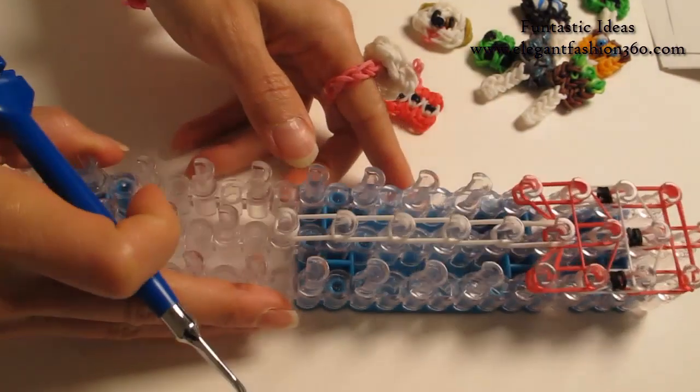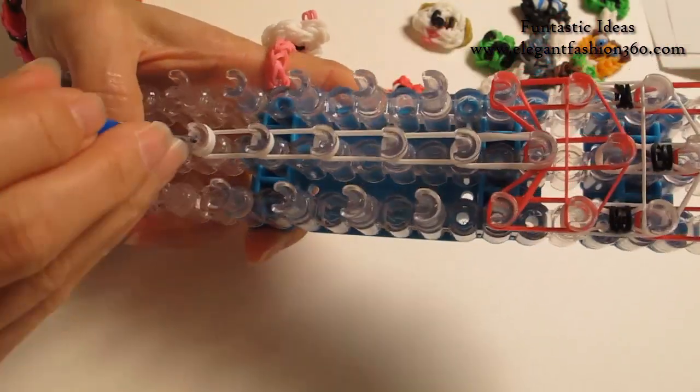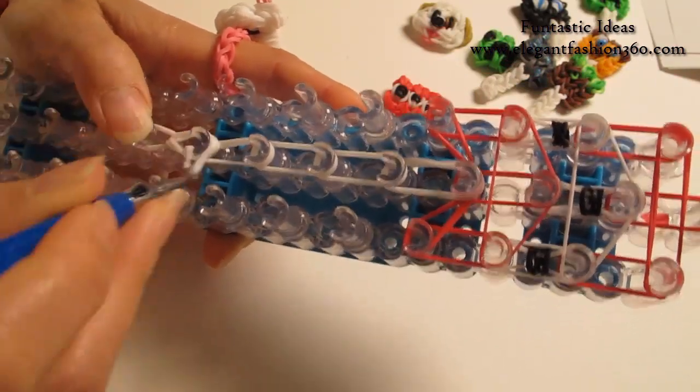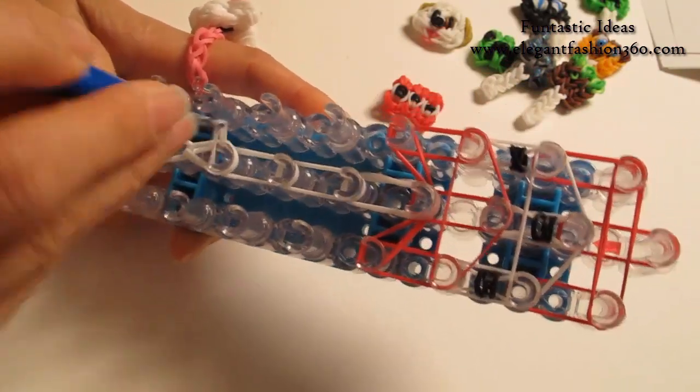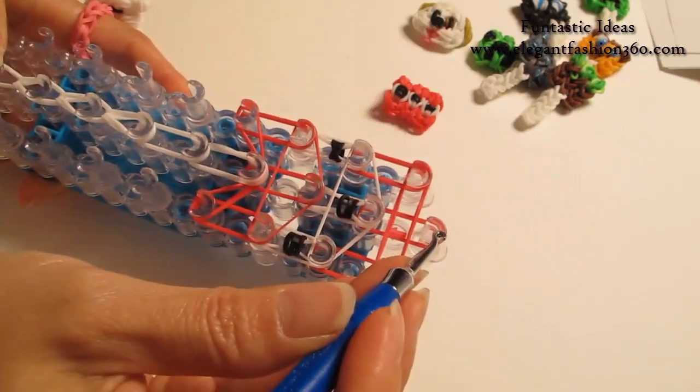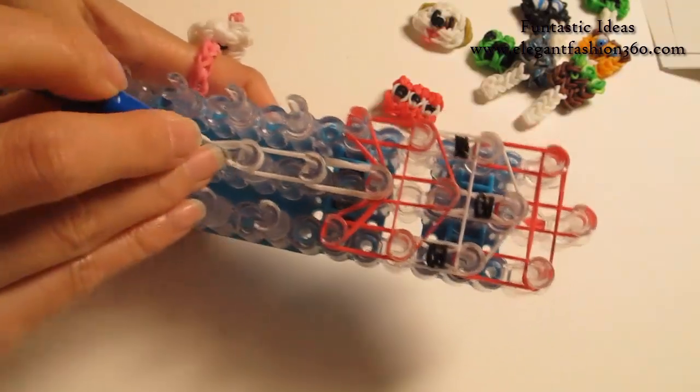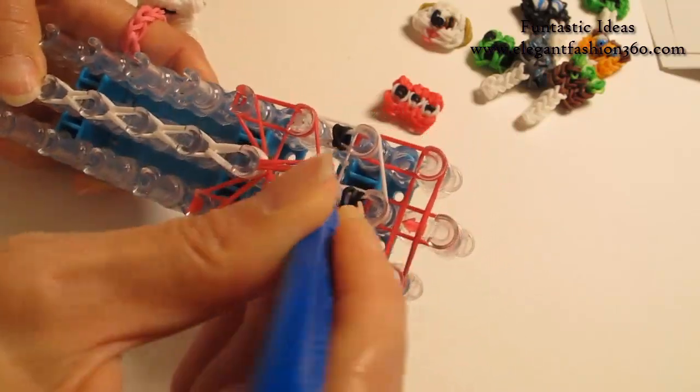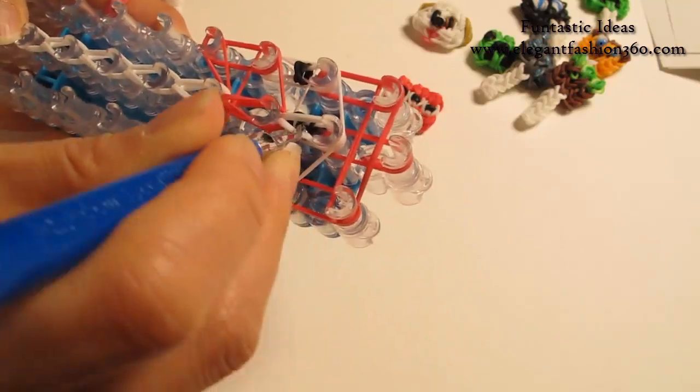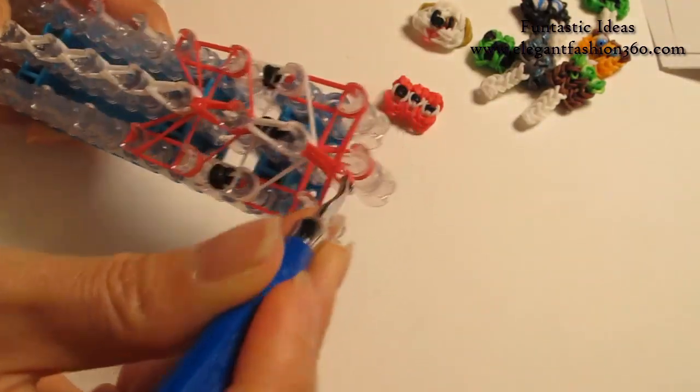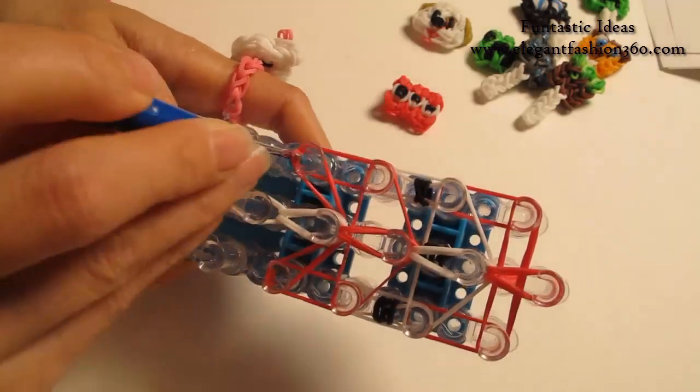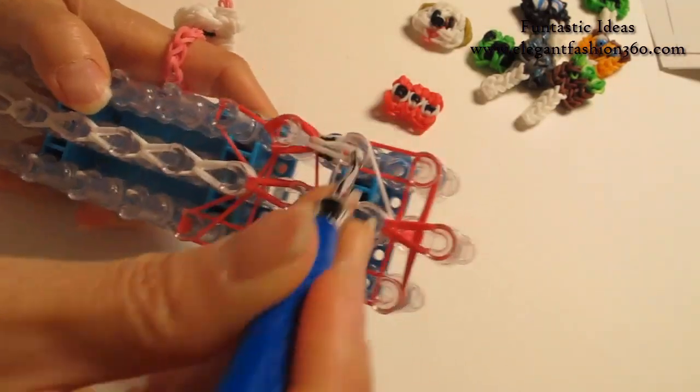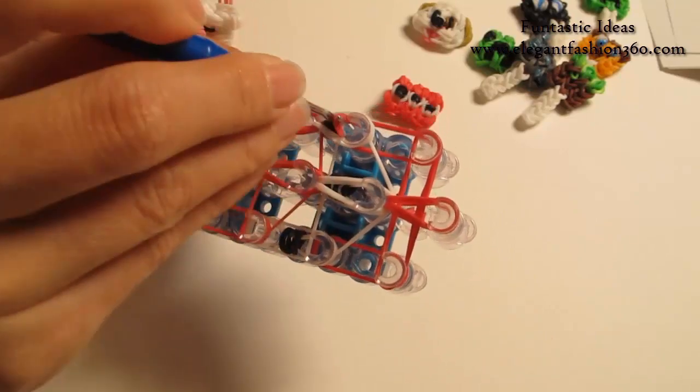Now I'm going to rotate the loom and start looping. Grab the bottom 2, hook it to the next one, bottom 2, hook it to the next one. And we're going to continue to do this all the way to the end of the loom here. And the same, just loop in all the bands, finish up all of them.